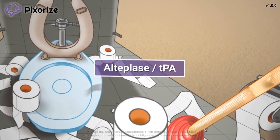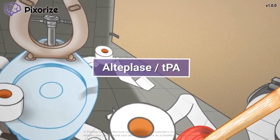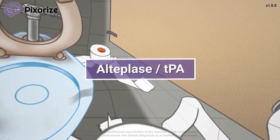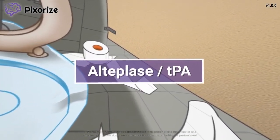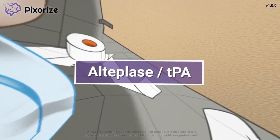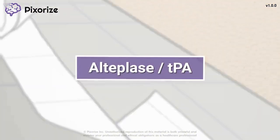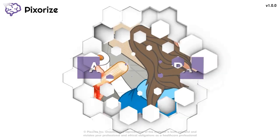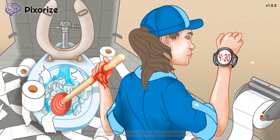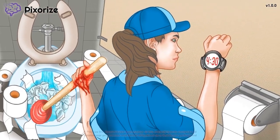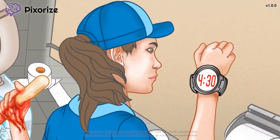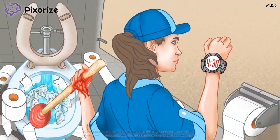Alteplase, also known as TPA, is a thrombolytic medication that is often called a clot buster. It is used to treat existing clots. In this mnemonic video, we'll cover important facts about Alteplase so you'll be ready come test day.